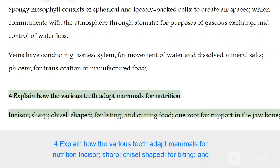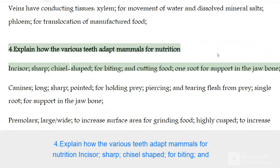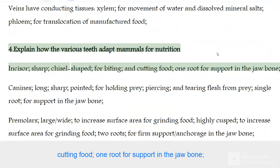Explain how the various teeth adapt mammals for nutrition. Incisors are sharp and chisel-shaped for biting and cutting food, with one root for support in the jaw bone.